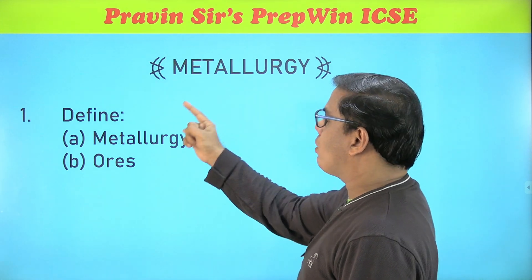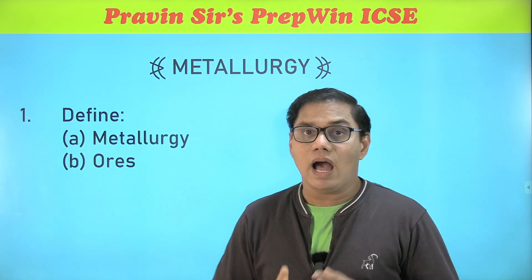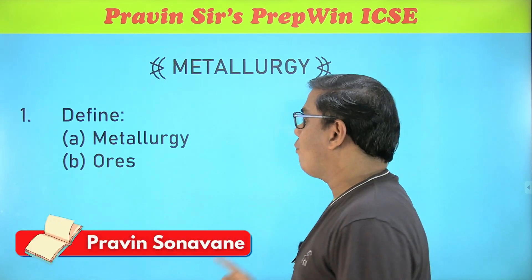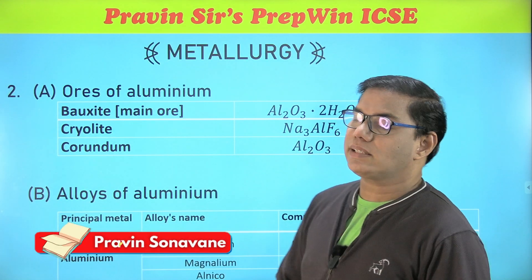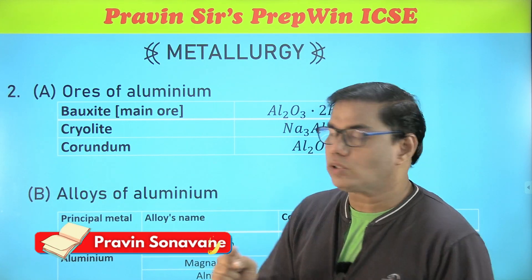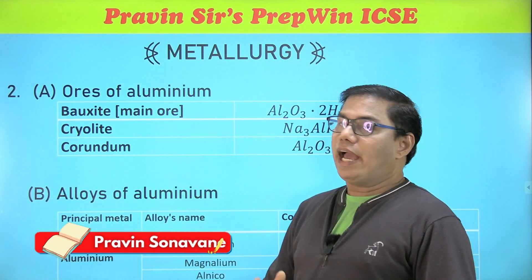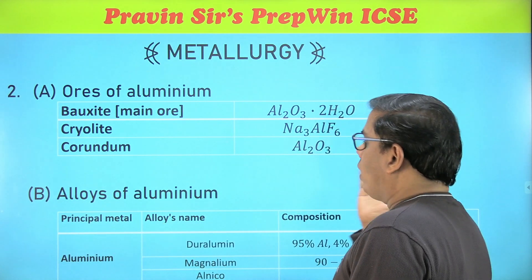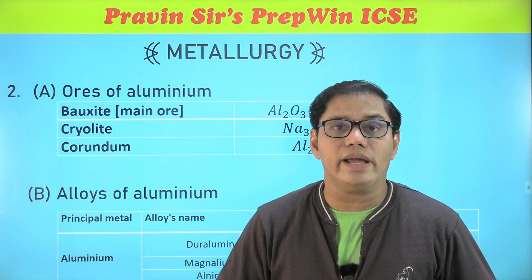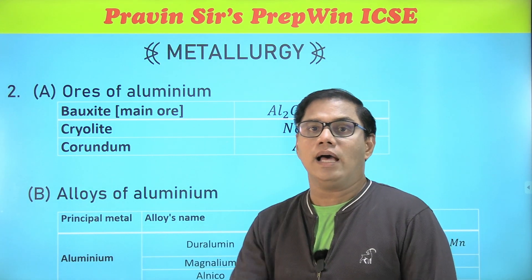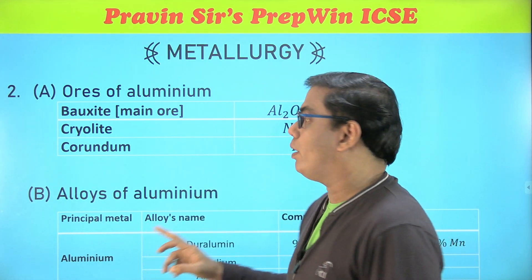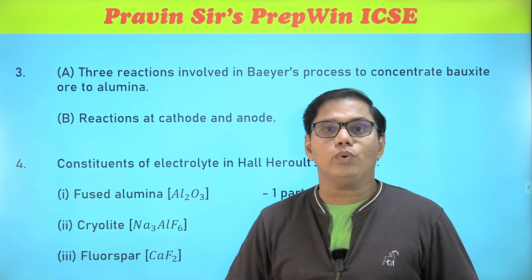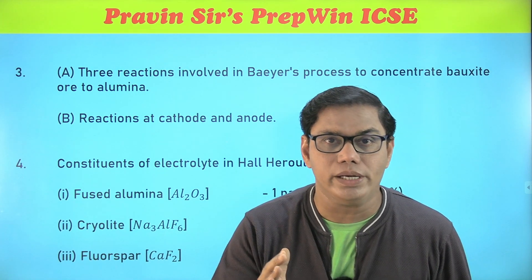You can expect one of these two definitions — either a definition of metallurgy or a definition of ore — so learn these definitions properly. Also, ores of aluminium and alloy of aluminium: you must know the name of the ore and the name of the alloy along with its molecular formula. That is prediction number two. Prediction number three is related to the reaction in the extraction of aluminium.